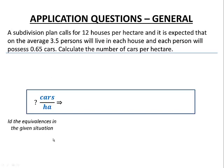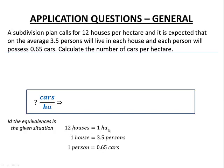We look for the equivalences in our given example. Reading through again, we can see that 12 houses is equivalent to one hectare — remember HA is the abbreviation for hectare — one house is equivalent to 3.5 persons, and one person is equivalent to 0.65 cars.